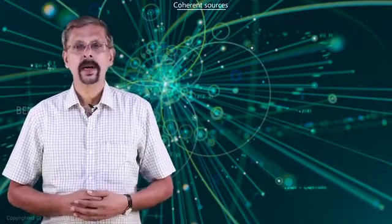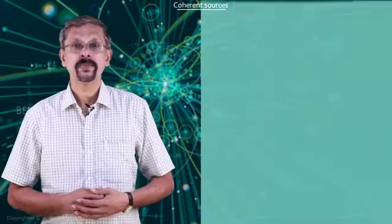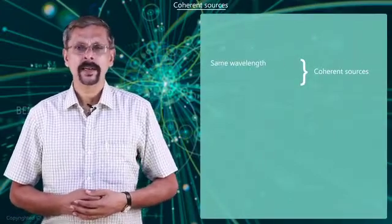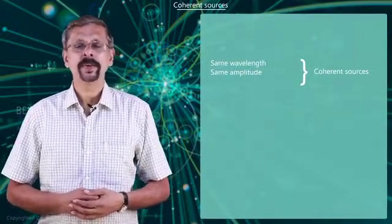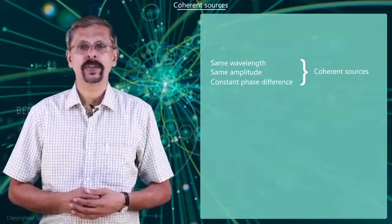Now I will tell you the importance of coherent sources in interference. Two sources of light are said to be coherent if they emit light of same wavelength, nearly same amplitude, and always maintain a constant phase difference between them.